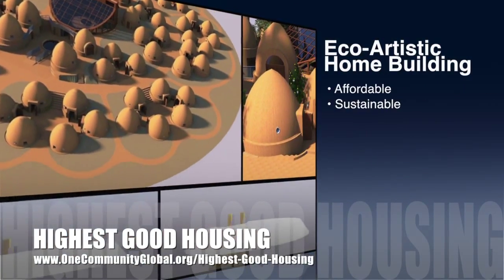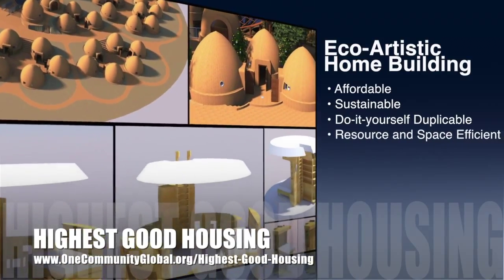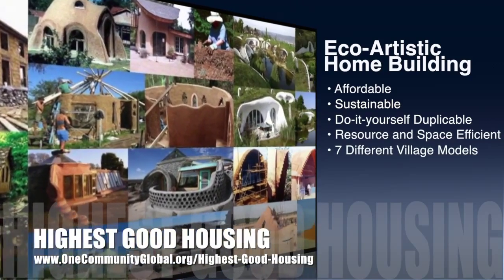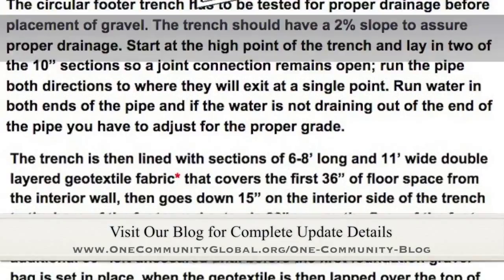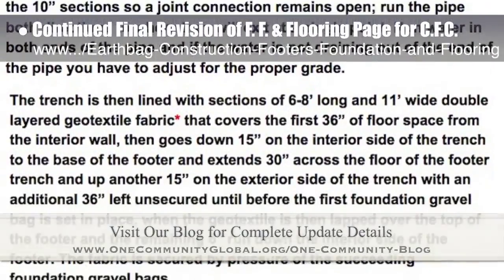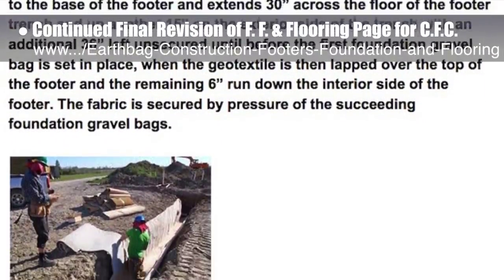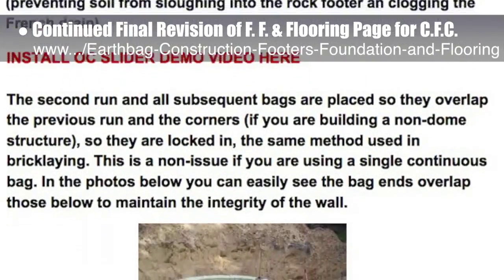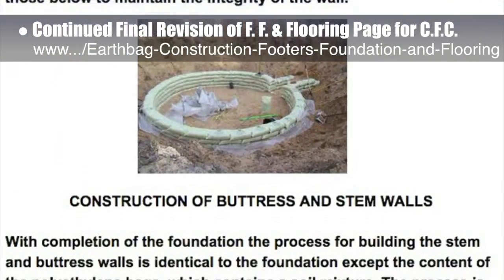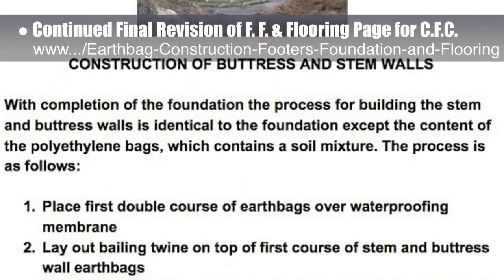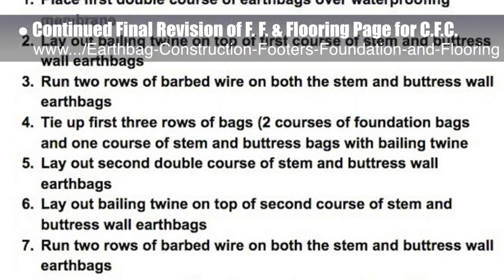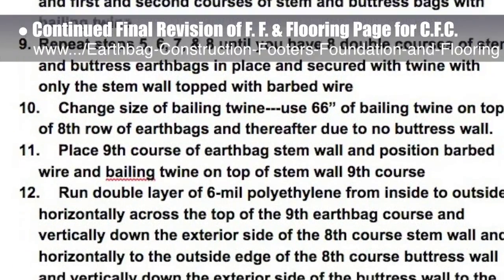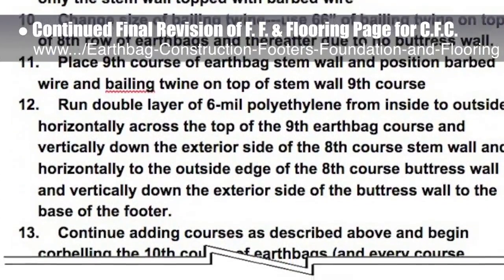The OneCommunity approach to highest good housing is eco-artistic home building that is affordable, sustainable, do-it-yourself duplicable, resource and space efficient, and consists of seven different sustainably constructed village models. This last week, the core team working on highest good housing continued what we hope will be the final revision of the footers, foundations, and flooring page for the upcoming crowdfunding campaign. This included adding geotextile fabric and perforated corrugated pipe descriptions, recalculating lengths of geotextile and polyethylene, altering the water collection gutter, and rewriting the sequence of steps for foundation and stem, buttress, and earth bag walls. We'd say we're now 25% complete with this revision.